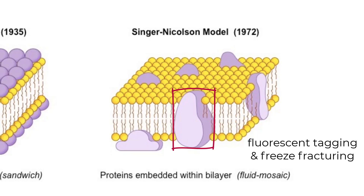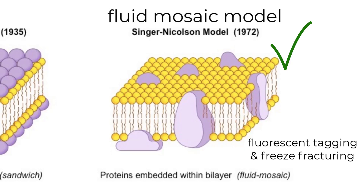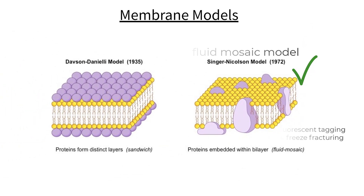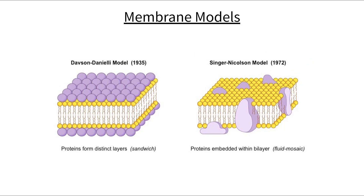Their model, called the Singer-Nicholson model, was proposed after these findings and is the model we still use today. This is also known as the fluid mosaic model — mosaic because there are many different structures found within it, and fluid because these structures are constantly in motion, bumping into and moving past each other while still maintaining the barrier that separates the inside of the cell from the outside.